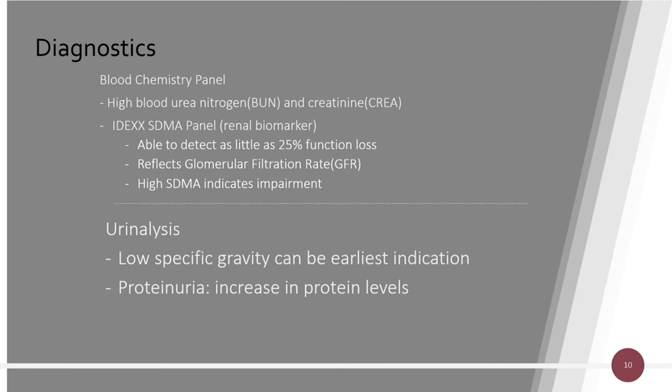Diagnostics associated with renal failure include a blood chemistry panel, which looks at the blood urea nitrogen (BUN) levels and creatinine levels. You could also perform an SDMA panel. These can be done in-house in most vet clinics using an IDEXX machine. An SDMA is a renal biomarker — all you really need to know is that it's a renal biomarker.